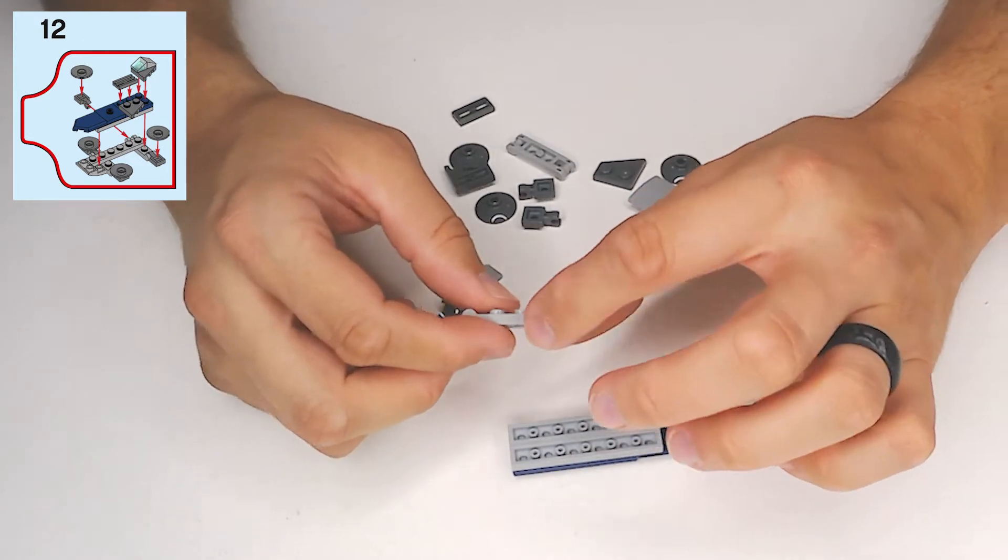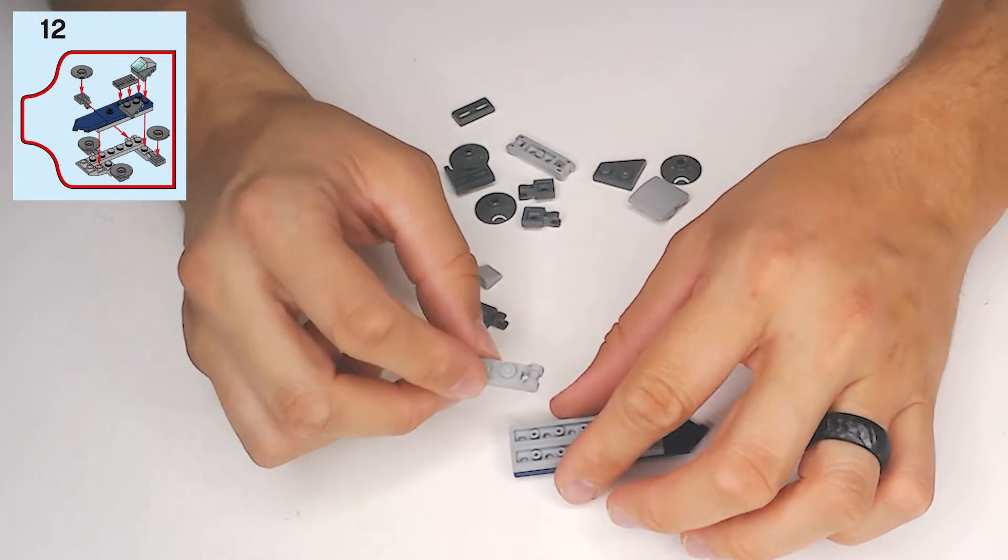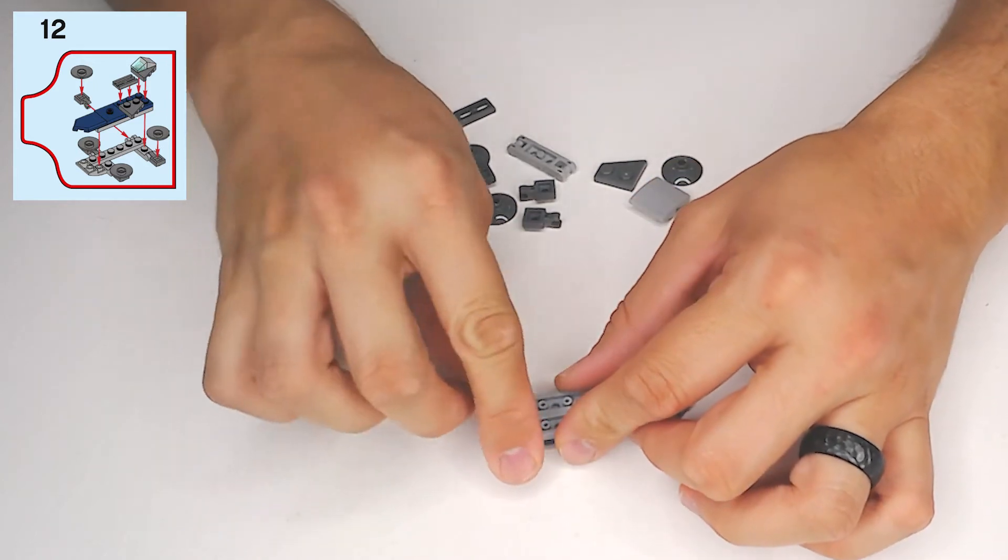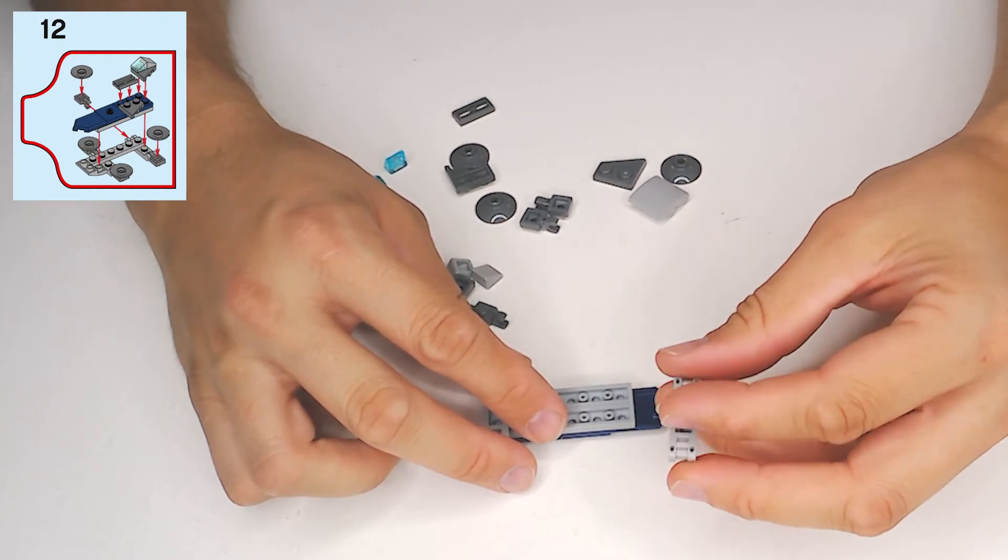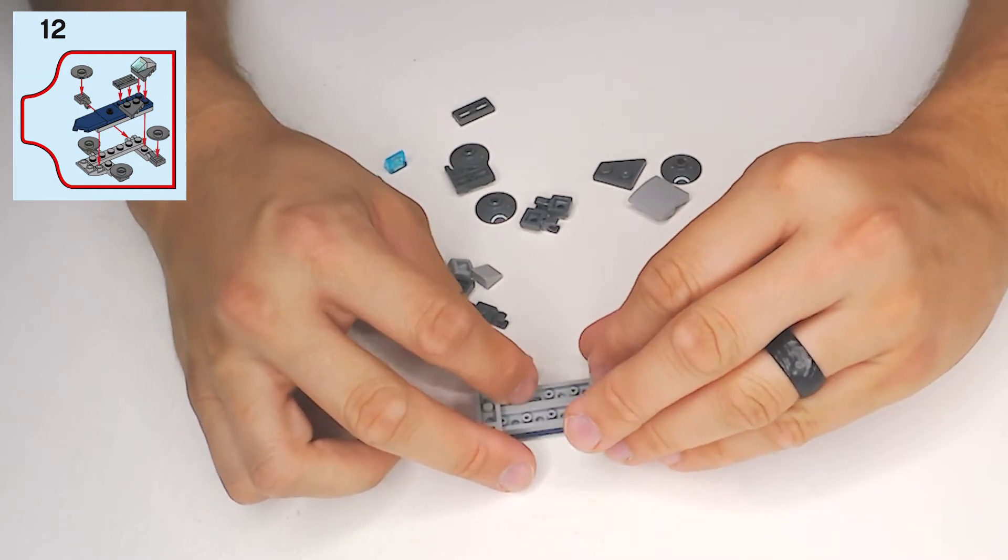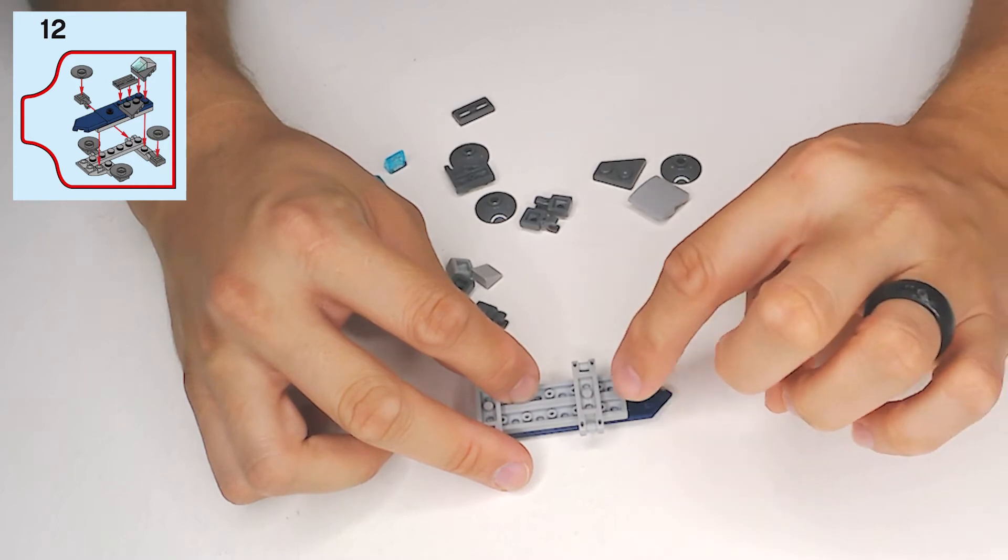one by two plate that has bars off either end in light gray, and we're going to put that onto the last row of studs there. Then this one we're going to go onto the same piece, we're going to the centralized row from the front.